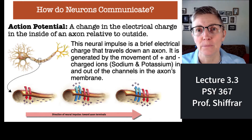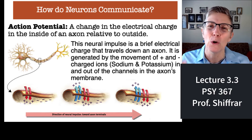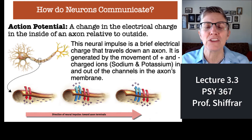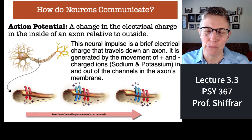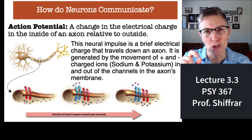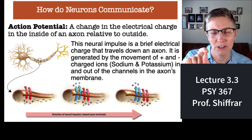Welcome back. In this segment, I want to speak briefly about how neurons send signals. It turns out that the mechanisms neurons use differ within the neuron and between neurons. Within the neuron, information is sent via the action potential, which is a difference in the electrical charge on the inside of the neuron's axon and the outside of the neuron's axon.